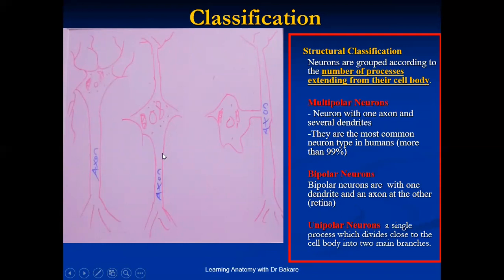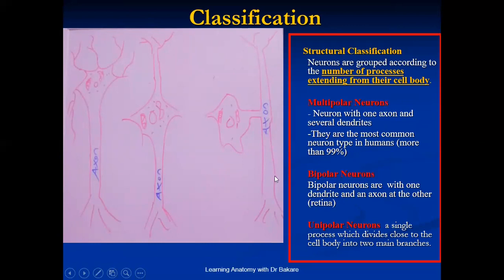The second type is the bipolar neuron. Bi means two, meaning from the cell body you have two extensions. The unipolar neuron has just a single extension from the cell body, which then divides into two to form the dendrite and the axon.